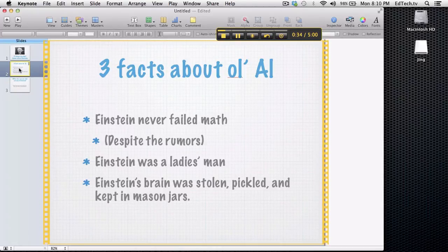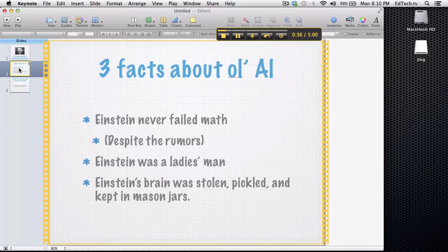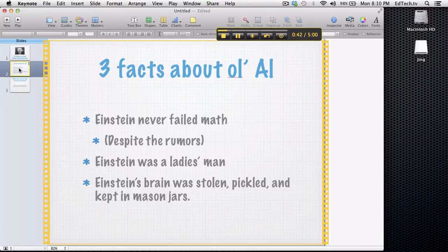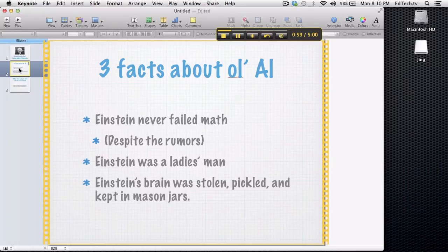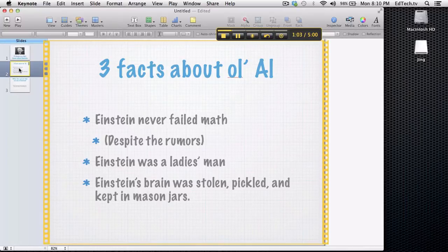So I can say, you know, three facts about old Al. One: Einstein never failed math, despite the rumors. You know, sometimes there's this false rumor that goes around that Albert Einstein failed math, which isn't true. Number two: Einstein was a ladies' man. Very popular with the women, and sometimes not to his advantage. And then three, the best one of course is that Einstein's brain was stolen, pickled, and kept in mason jars. Totally true and lots more weird than just that part of the story.